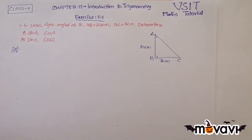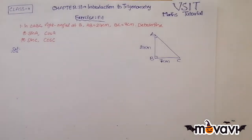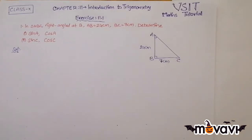In triangle ABC, right angled at B, AB is equal to 24 cm and BC is equal to 7 cm. We have to determine sin A, cos A, sin C, and cos C. Before going to solve this problem, we should be aware of trigonometric ratios.